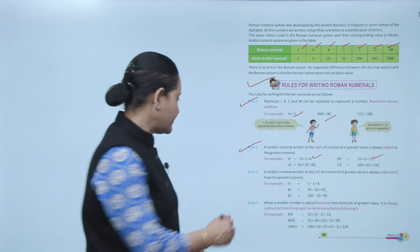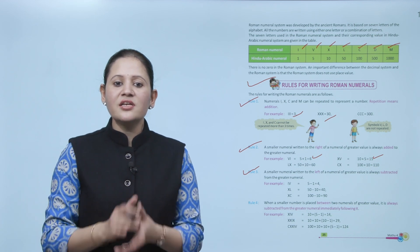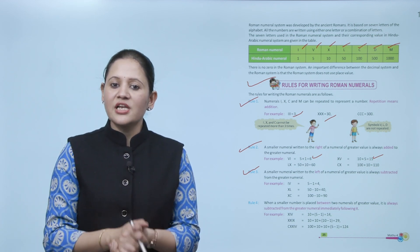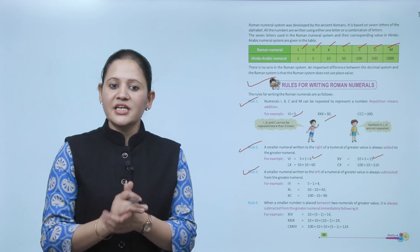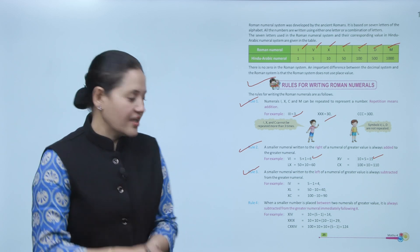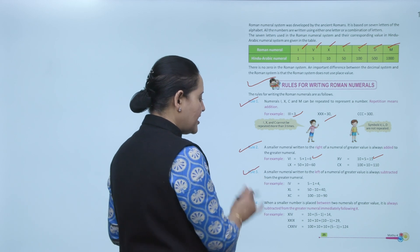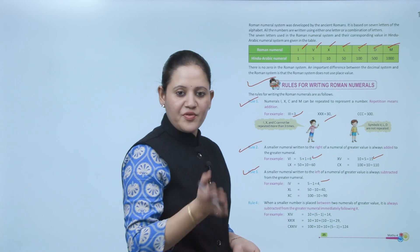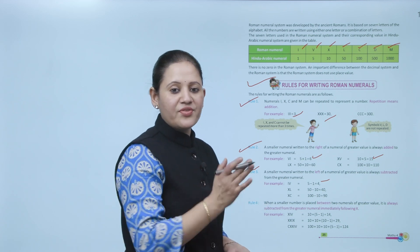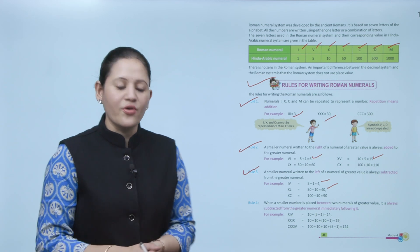Next, rule number three: The smaller numeral written to the left of the numeral of greater value is always subtracted from the greater numeral. For example, IV, so greater numeral ke left me smaller wala, so value ke hogi subtract, so aega 5 - 1, that is 4. XL, L is for 50, X for 10, so 50 - 10, that is 40.